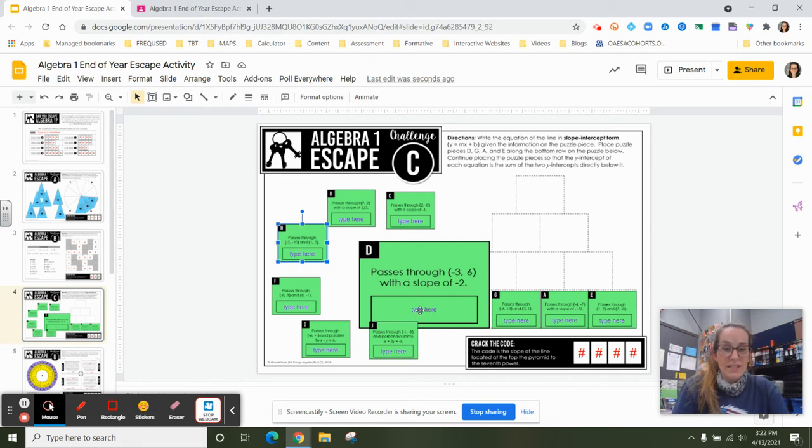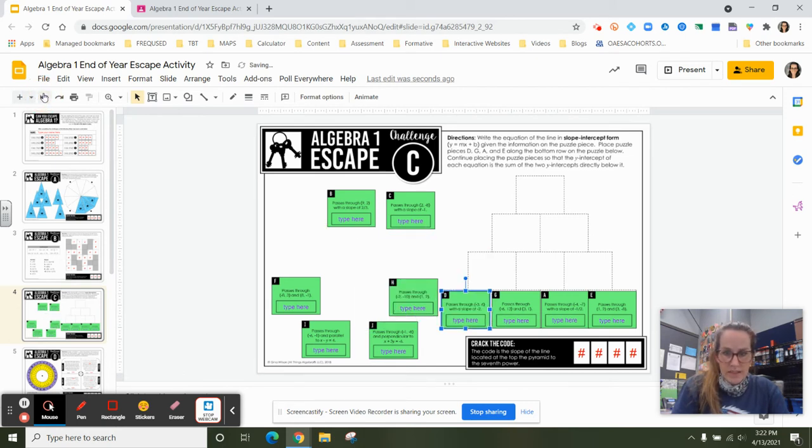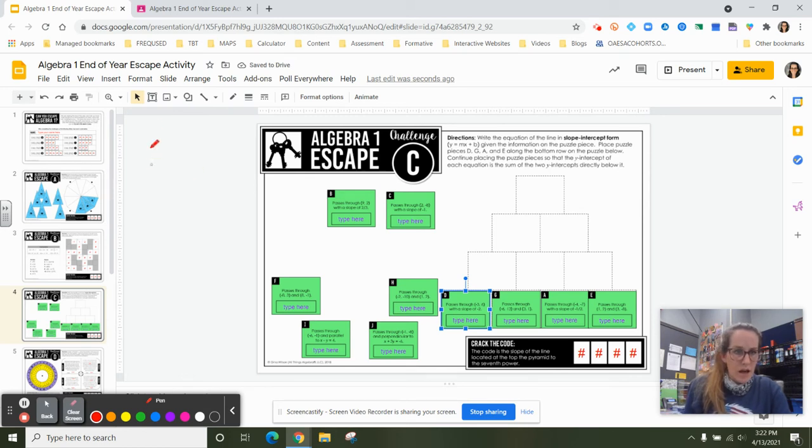So it passes through the point negative 3, 6, and has a slope of negative 2. All right, let's see here. I'm going to go back to the original size. So passes through the point of negative 3, 6, and a slope of negative 2.